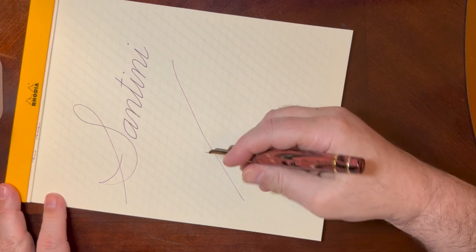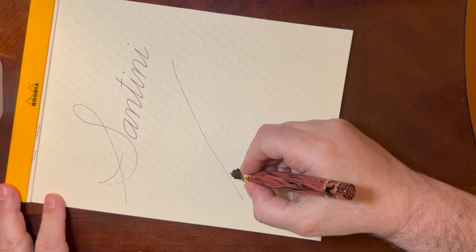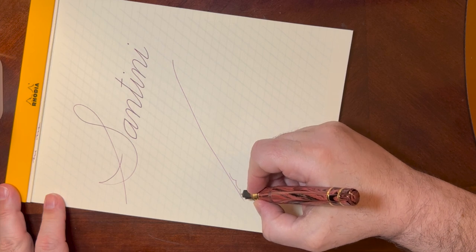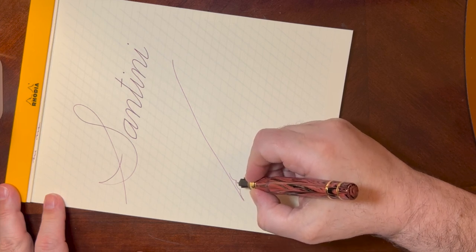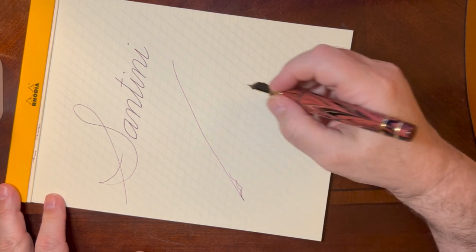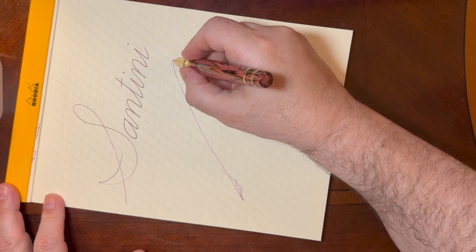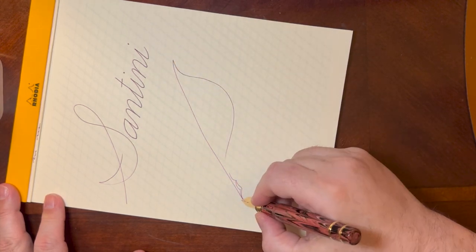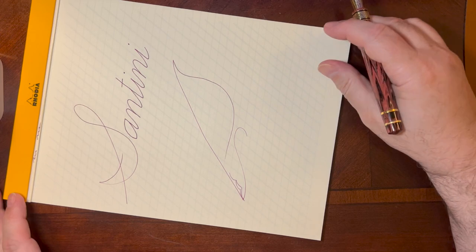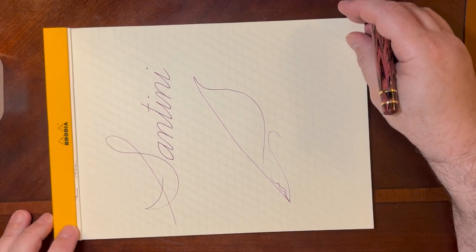You can actually turn the nib over and get a really fine line if you want. And then finally the feather portion and a little curly cue.